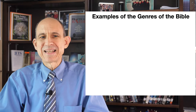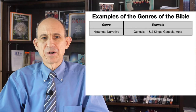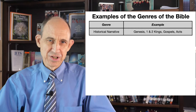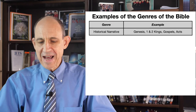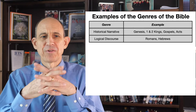Let's look at some examples of the different genres of the Bible. First, there is historical narrative. The Bible contains a lot of historical narrative — the book of Genesis, for example, or First and Second Kings or Chronicles. The Gospels are a kind of historical narrative that focuses especially on the words and works of Jesus Christ. The book of Acts is also historical narrative.